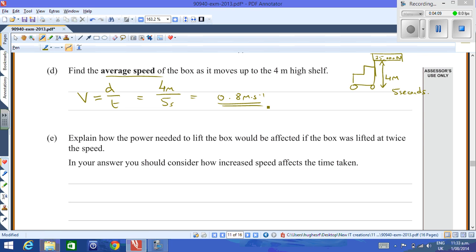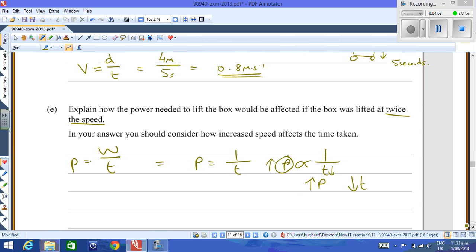Part E then explains how the power needed to lift the box would be affected if the box was lifted at twice the speed. In your answer you should consider how increased speed affects the time taken. From the formula power equals work over time, if you just remove work for a second and relate power to time, you can see that power is, as they say in math or physics, inversely proportional to time. In other words, if you want to decrease the time you must increase the power. If you increase the power then you will decrease the time. So if you want to decrease the value of T, the time taken to do the work...